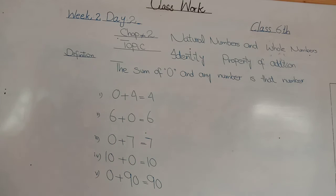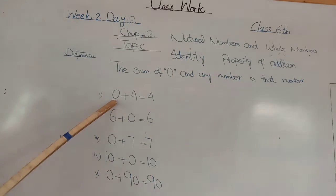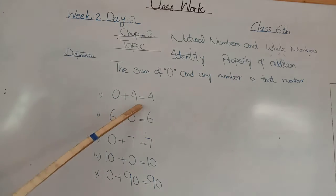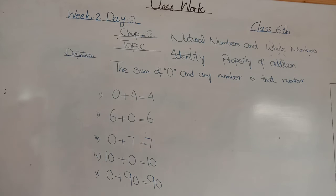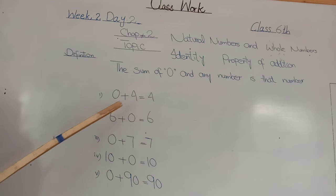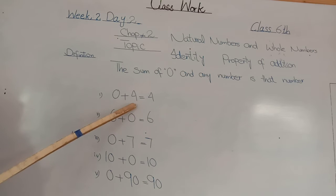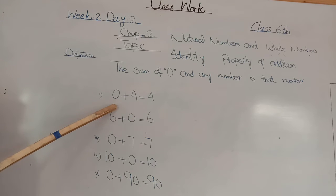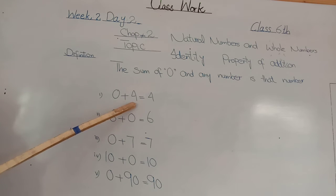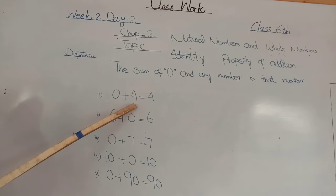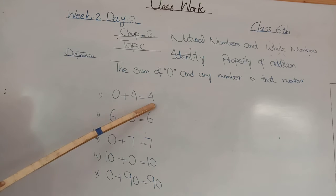Let's have some examples for your understanding. First of all, we have 0 plus 4 is equal to 4, because 0 is no quantity. So when we add 0 to 4, the quantity of 4 does not change. Hamne 0 ko add kia 4 mein. 0 ka matlab hai no quantity — 0 have no value. So the quantity of 4 does not change; 4 will remain again 4.